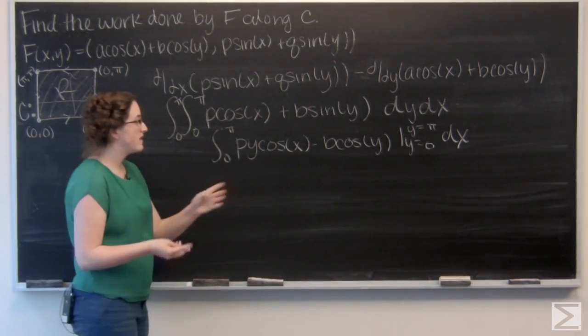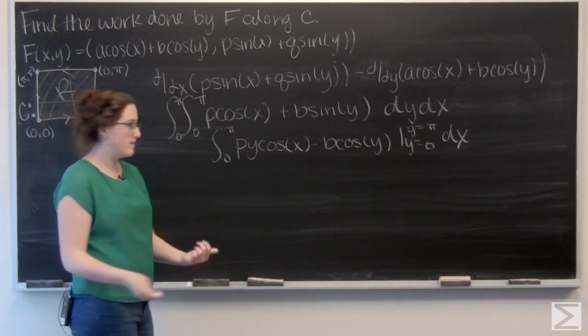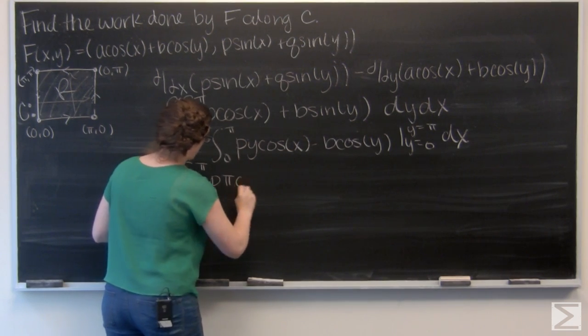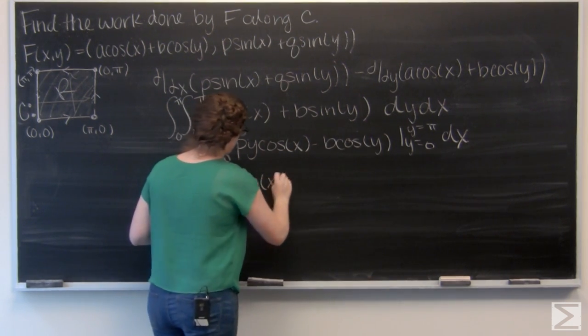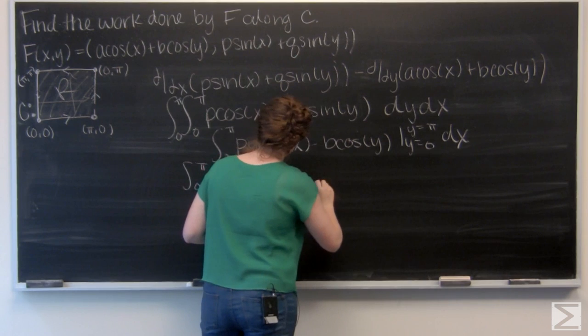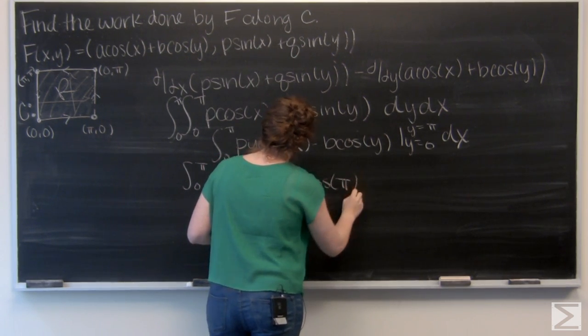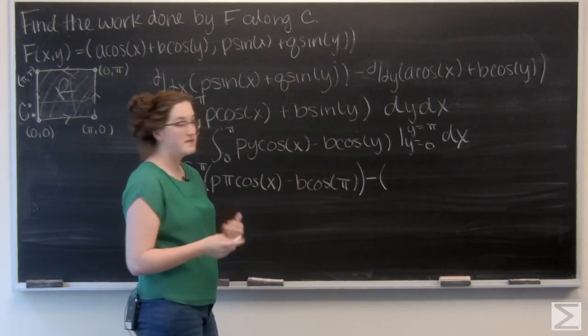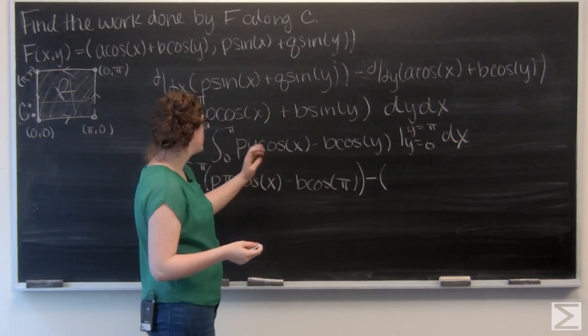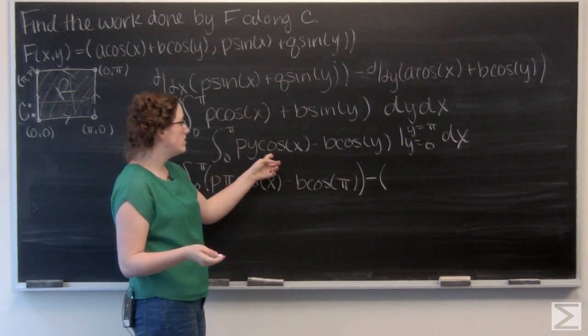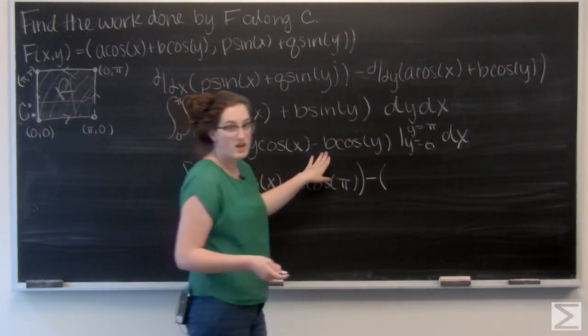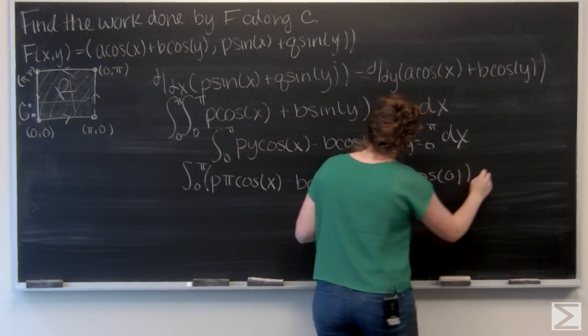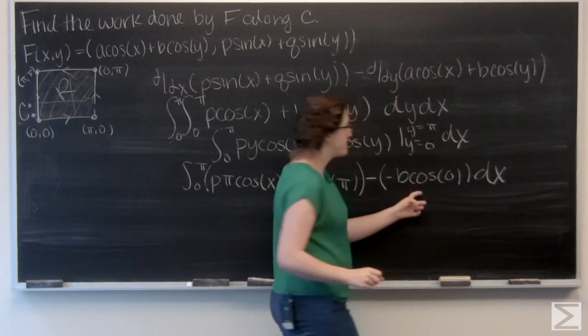And I'm going to evaluate that from y equals 0 to y equals π. So let's go ahead and plug in, everywhere I see a y, let's put a π. Now let's go ahead and plug in a 0, everywhere I see y. So this first term here becomes 0, and then for the second term I've got negative B times the cos of 0.